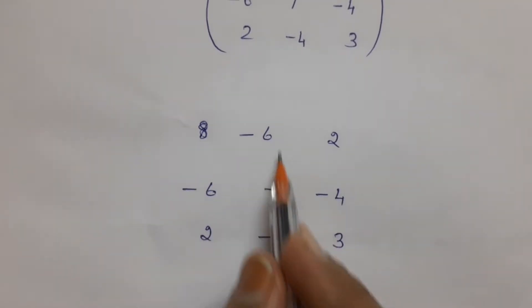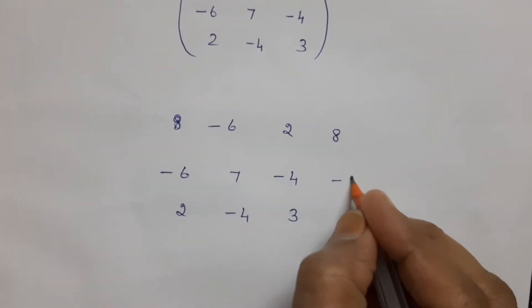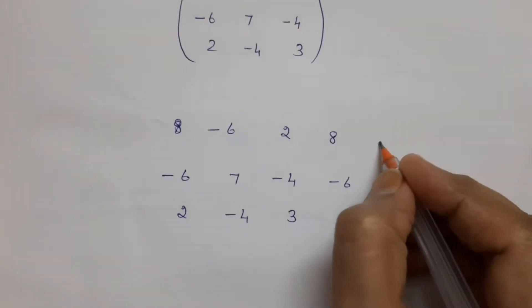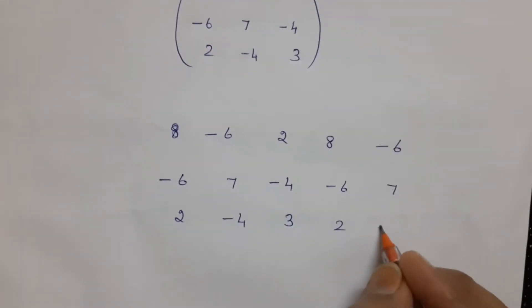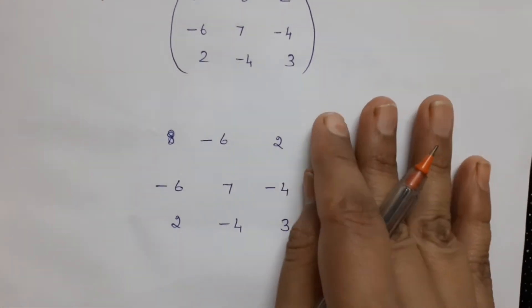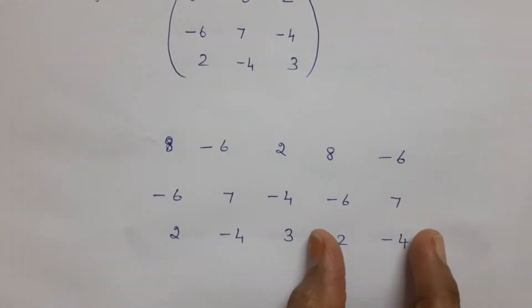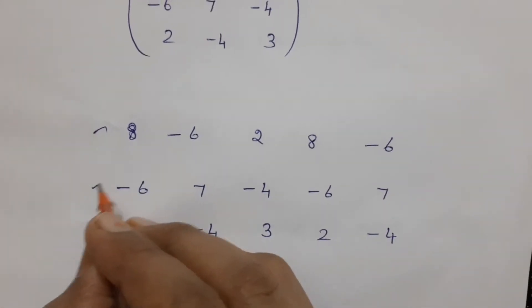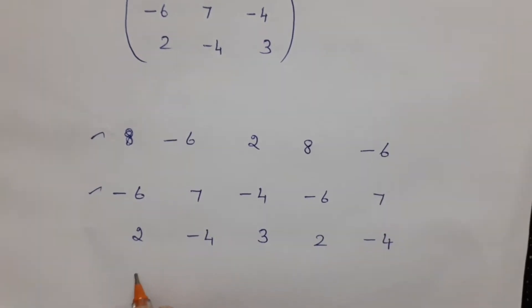Then repeat the first two columns here: 8, -6, 2; and -6, 7, -4. So write the given matrix and then repeat the first two columns again, and then repeat the first two rows.